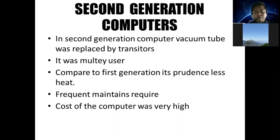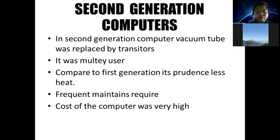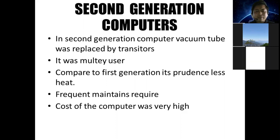In the second generation, the transistor produced less heat compared to the first generation. However, the disadvantages were that frequent maintenance was required, and the cost of computers was very high — they were very expensive.